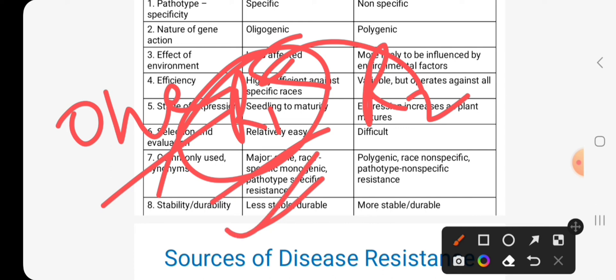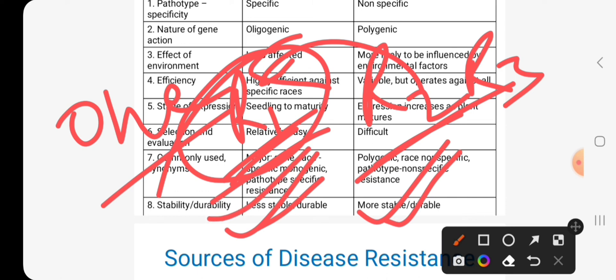But in case of horizontal resistance, there is resistance for R1, R2, race 1, race 2, race 3. It is more stable or durable in comparison to vertical resistance.